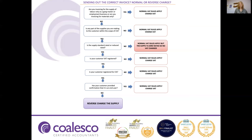We then look to see whether any part of the supplies you are making is within the scope of CIS — for example, electrical installation would be yes. Is the supply standard rated or reduced rated, i.e. ordinarily 20% or 5%? If you're doing electrical works inside an existing factory, the answer is yes. If you are working on a new build property and would ordinarily zero rate, the answer is no and you continue to zero rate.